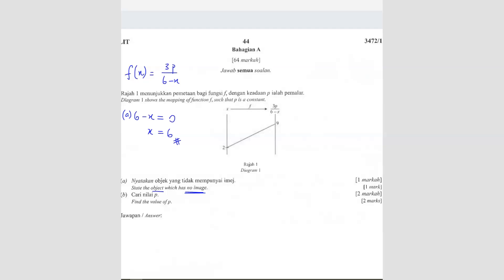Question B, find the value of P. We can use the given object and image. They say that when the object is 2, the image is 9. So we just substitute 3P over 6 minus 2 equals 9. So 3P equals to 6 minus 2 is 4 times 9 is 36. P equals 12.